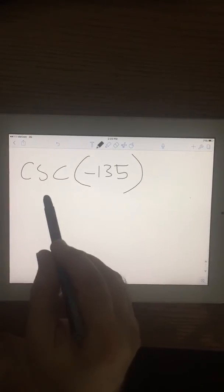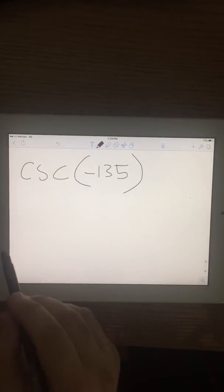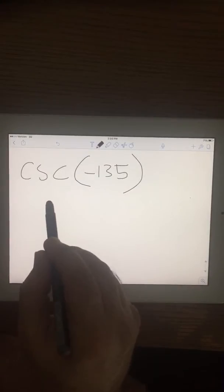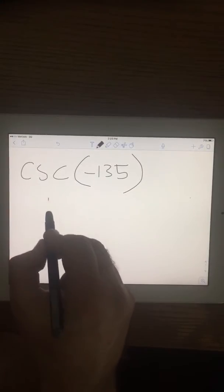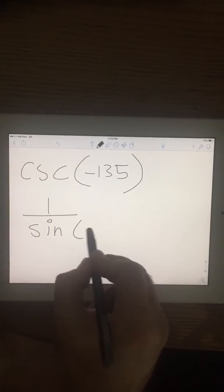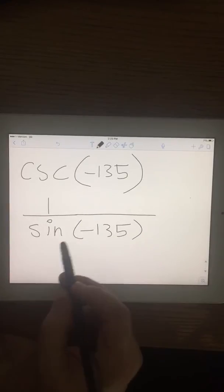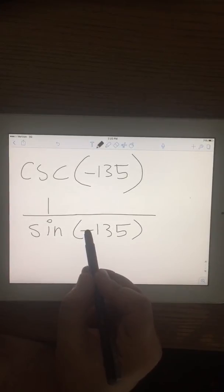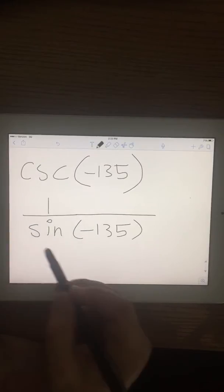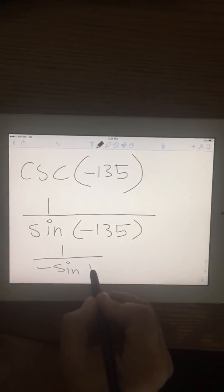Now in this problem we want to find cosecant negative 135. The first step, cosecant can be written as 1 over sine, and you know when there is a sine, the negative can get out. So this is going to be 1 over negative sine 135.